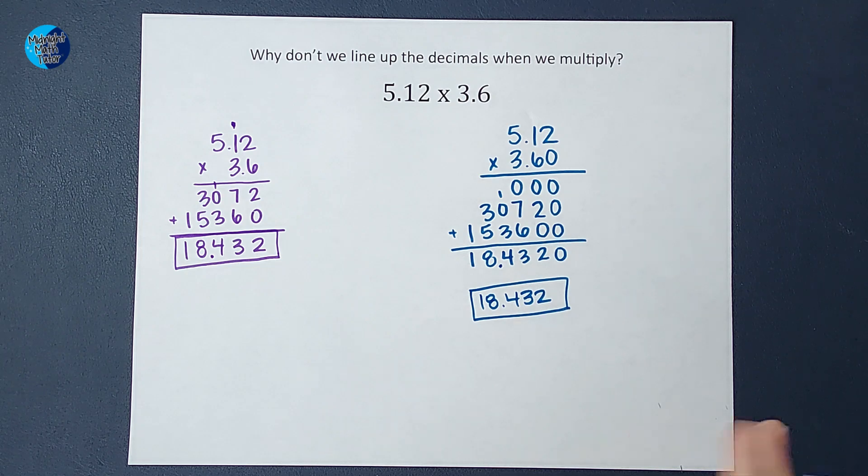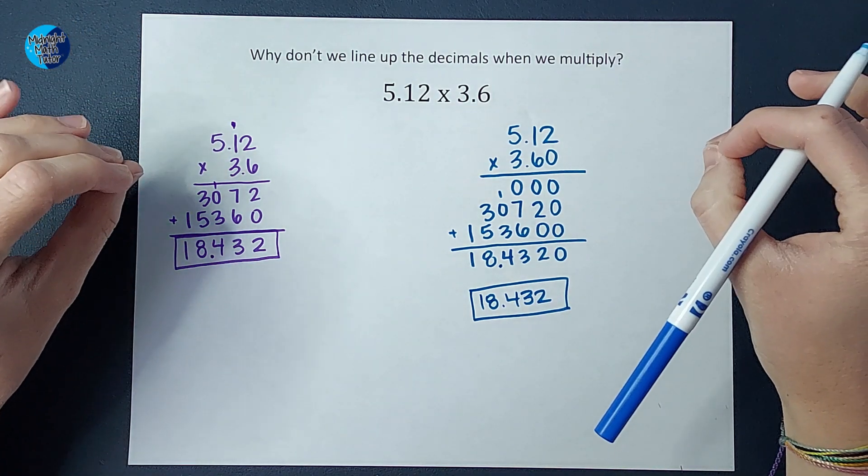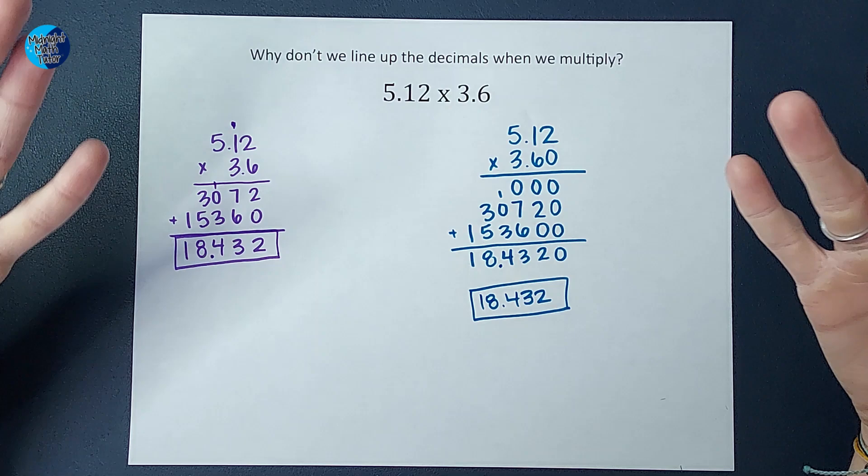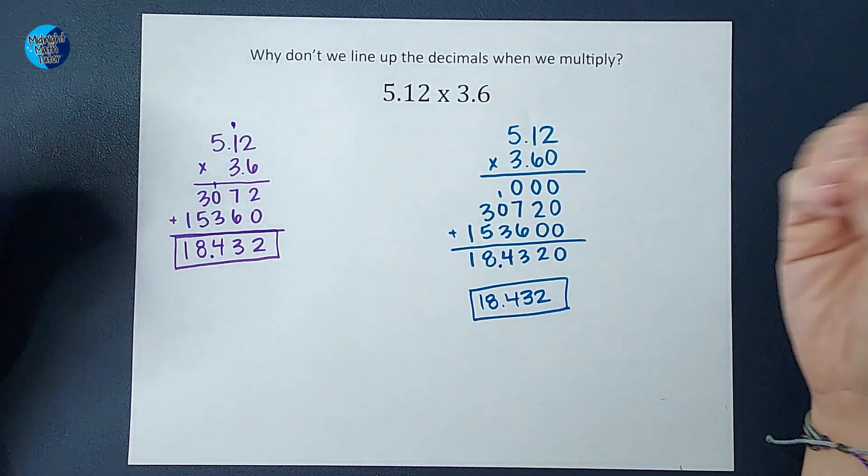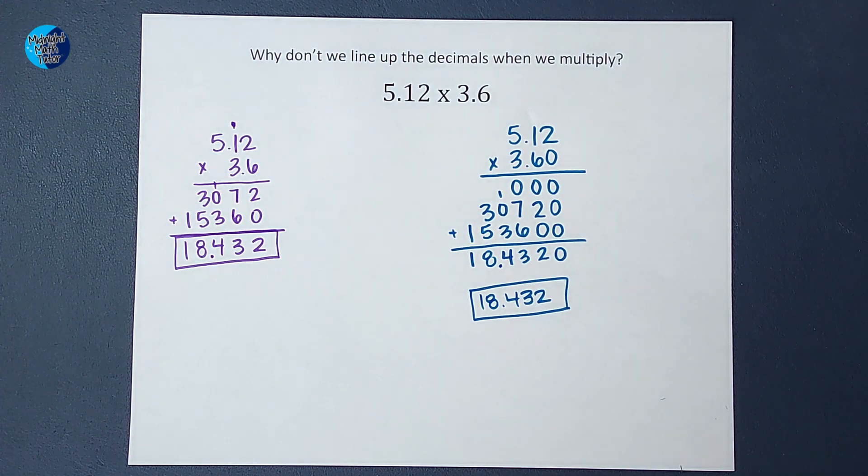So that's why you don't have to line them up. If you want to, I mean, go for it. But just know it isn't necessary to line them up when multiplying. It's not wrong. It's just not needed. So hopefully that made sense. Thanks.